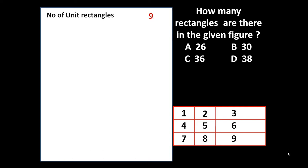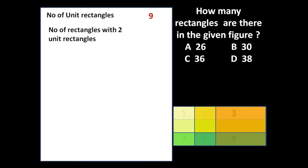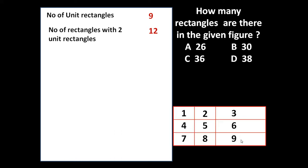Now let us determine the number of rectangles with two unit rectangles. If we combine two unit rectangles, a new rectangle will be formed. How many such rectangles are possible? Let us go one by one: 1, 2, 3, 4, 5, 6, 7, 8, 9, 10, 11, 12. So 12 such rectangles are possible which are made of two unit rectangles taken together.